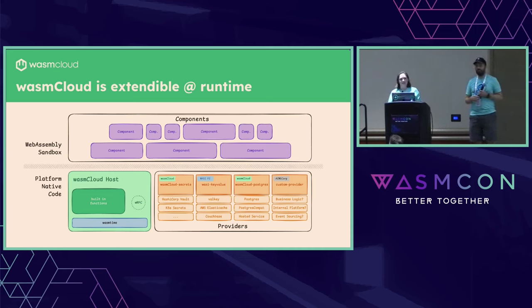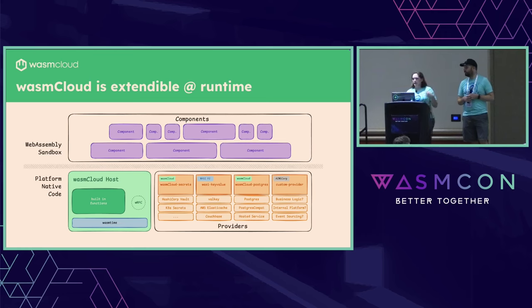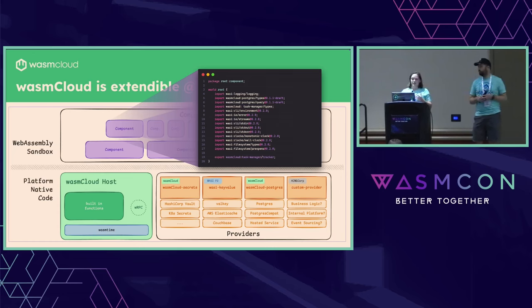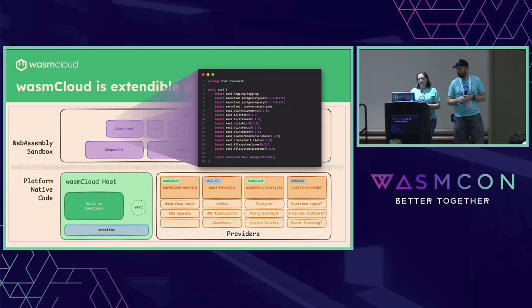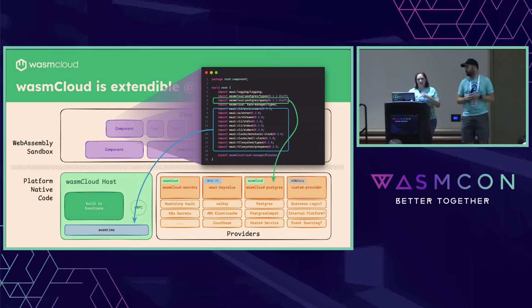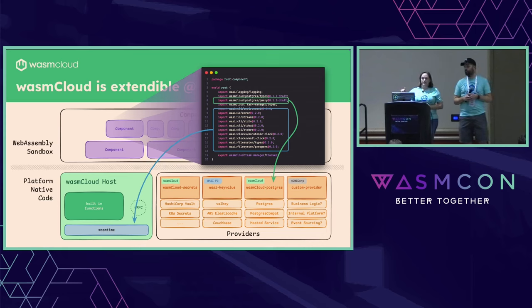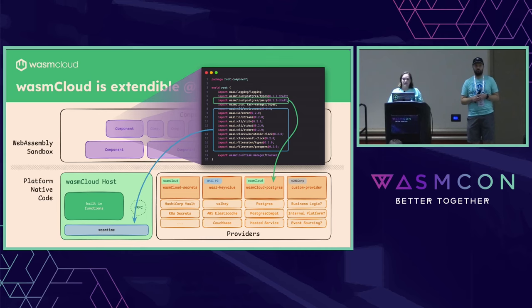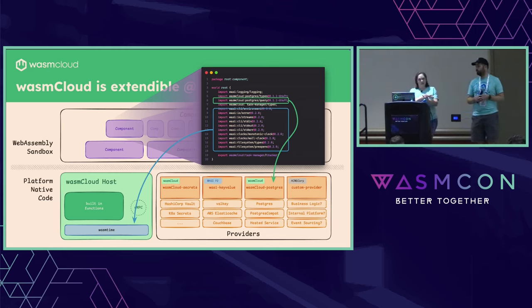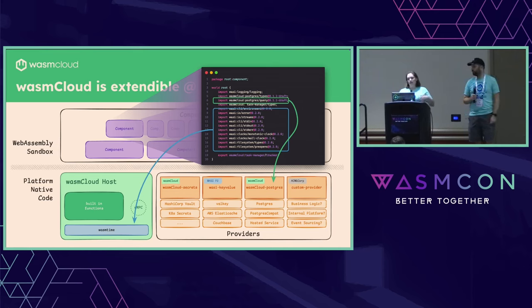WasmCloud itself is extendable at runtime. We've got three key entities that exist in our ecosystem. The first is a WebAssembly component, which runs inside the WebAssembly sandbox. Inside it, we have WIT — the WebAssembly Interface Type IDL. Inside the host, we can provide built-in capabilities, including a lot of the standard WASI interfaces. We can also extend this with providers, which are host plugins running in a separate process, allowing us to update at runtime. The key thing is these are links — my component is linked to capabilities provided by the host and by my providers, and I can also link it to other components.